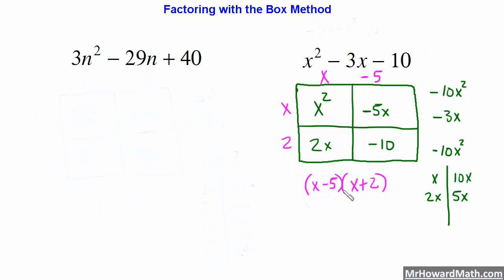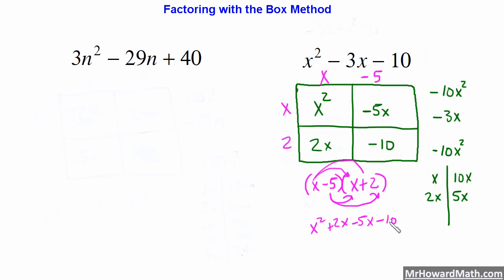Now we can multiply these two binomials together to verify we get the original trinomial. X times X is X squared, X times 2 is 2X, negative 5 times X is negative 5X, and negative 5 times 2 is negative 10. Combining like terms: X squared, then 2X minus 5X is minus 3X, and then minus 10. As you can see, we end up with what we started with, so we know our factoring is correct.